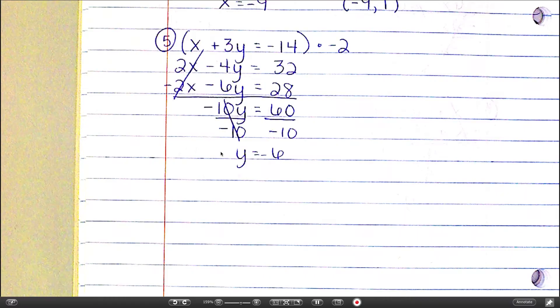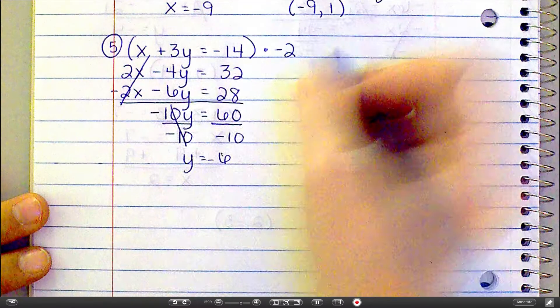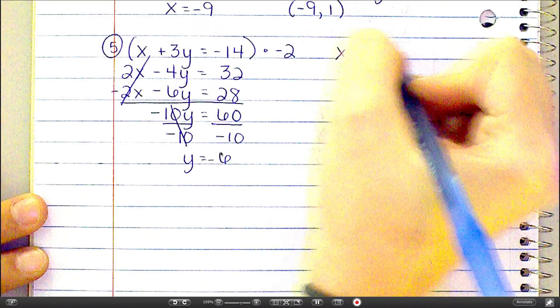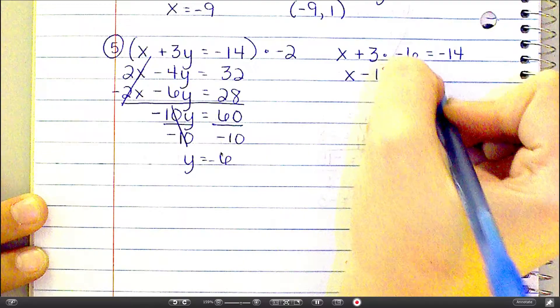Now let's plug back in some place. Probably that first equation looks the best. So I'm going to say x plus 3 times negative 6 equals negative 14. That's negative 18 right there. So x minus 18 equals negative 14.